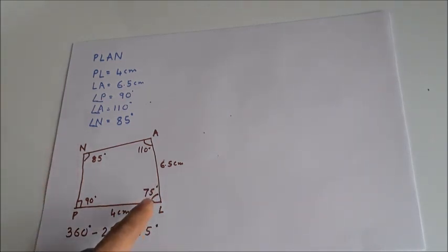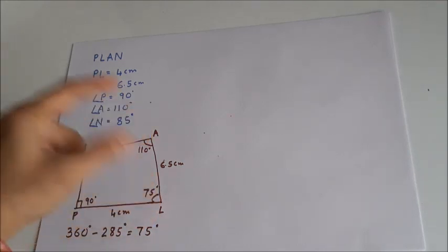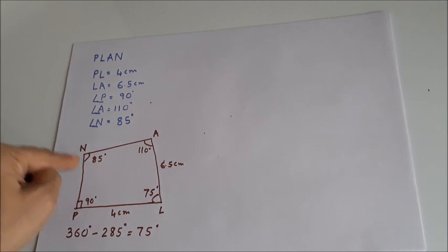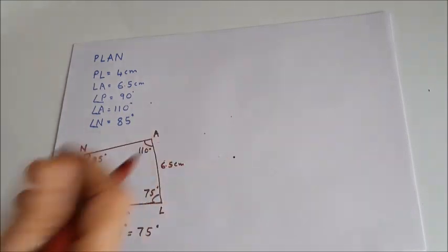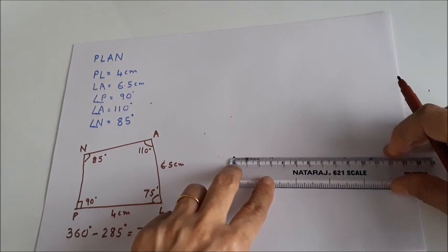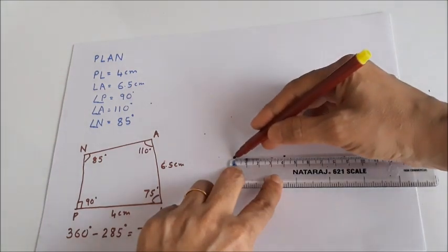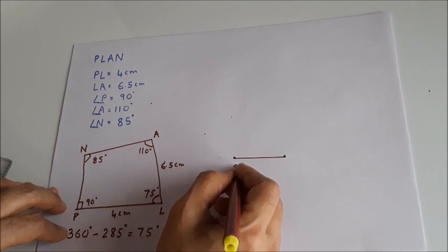Now we can draw a 75 degree angle at L, then cut off 6.5 cm, then draw 110 degrees at A to get point N automatically. Let's start. First, let us draw PL equal to 4 centimetres. I mark the point P, take 4 centimetres, and draw the segment. This is P and L.